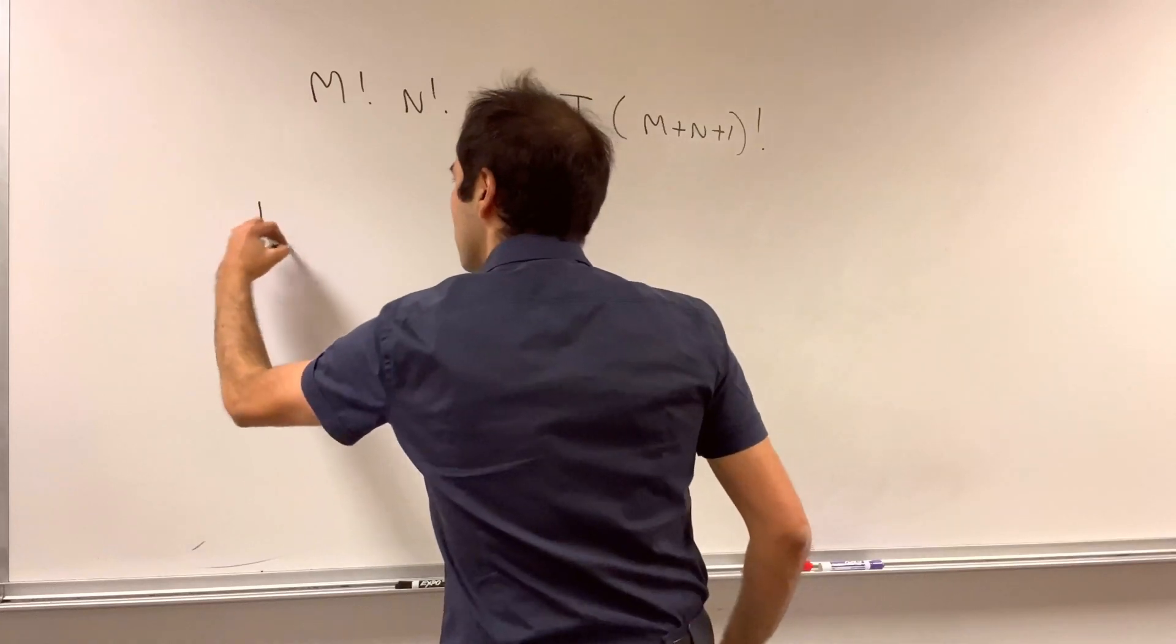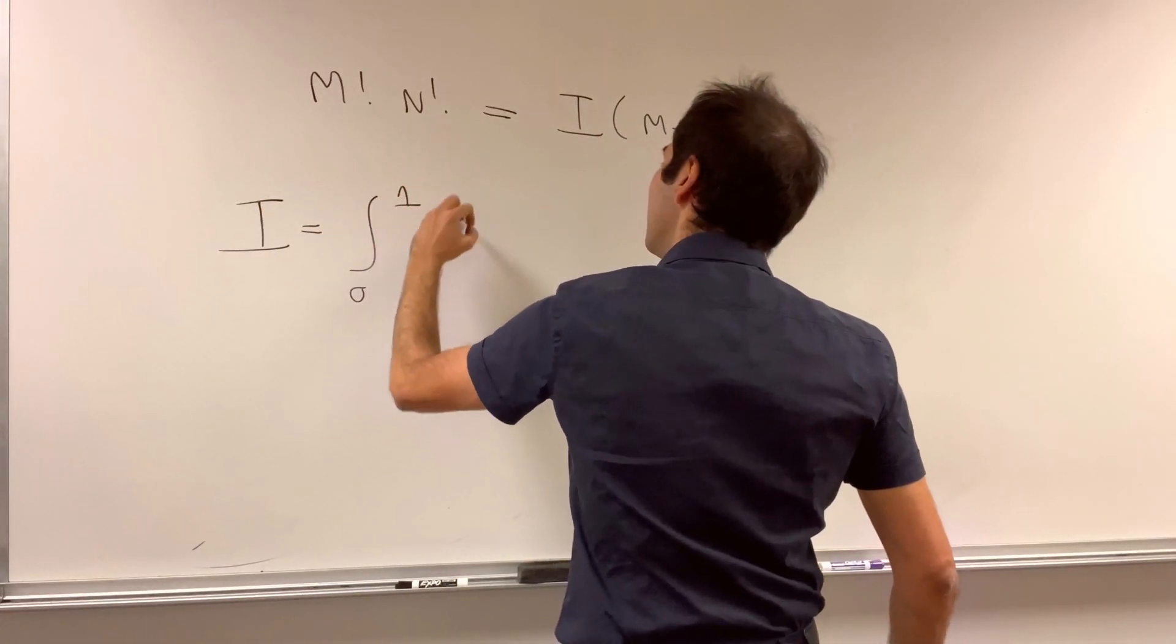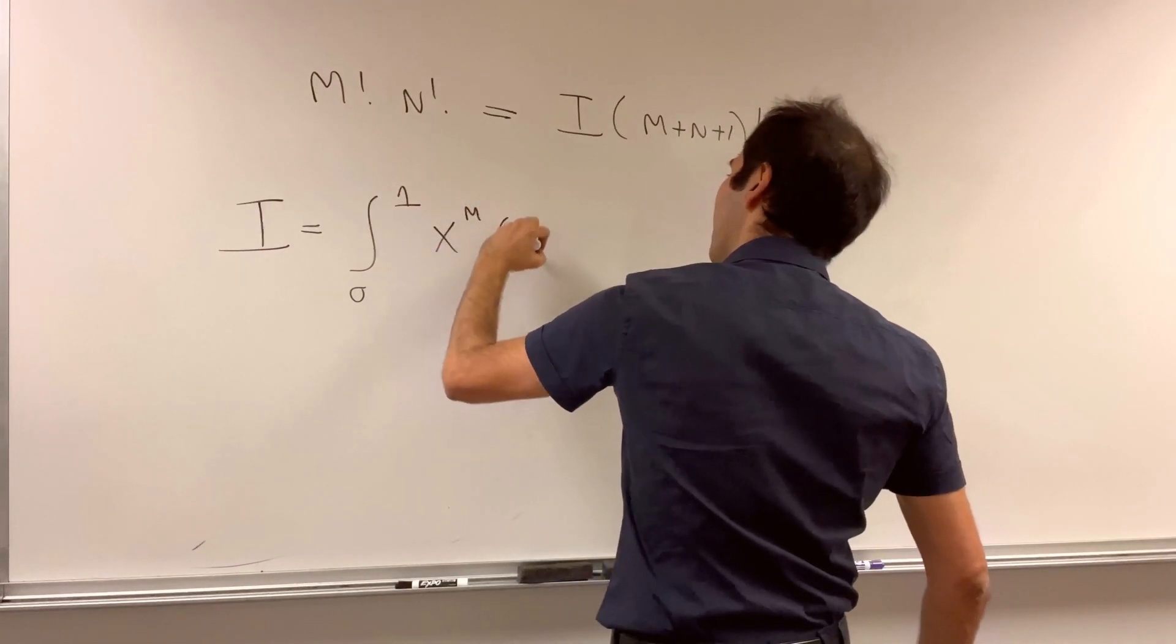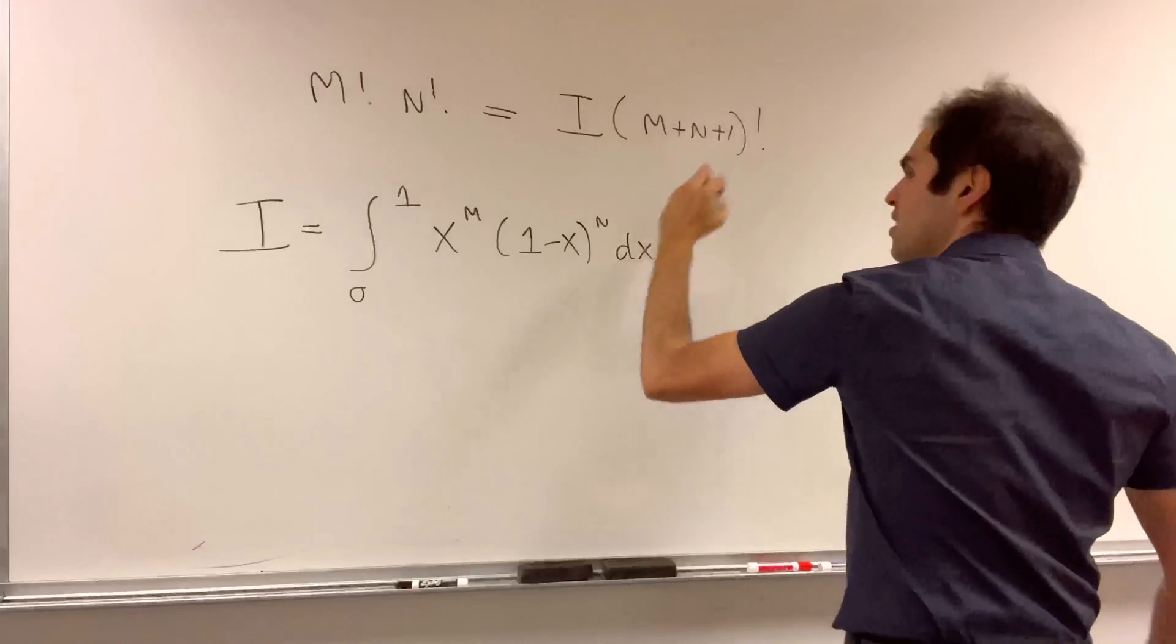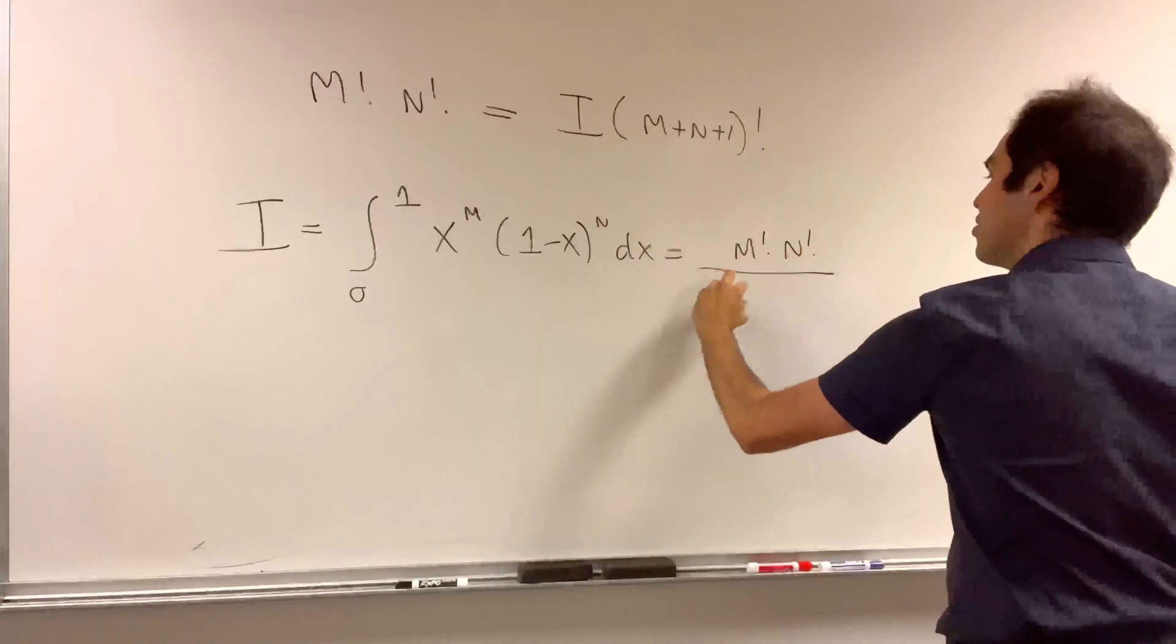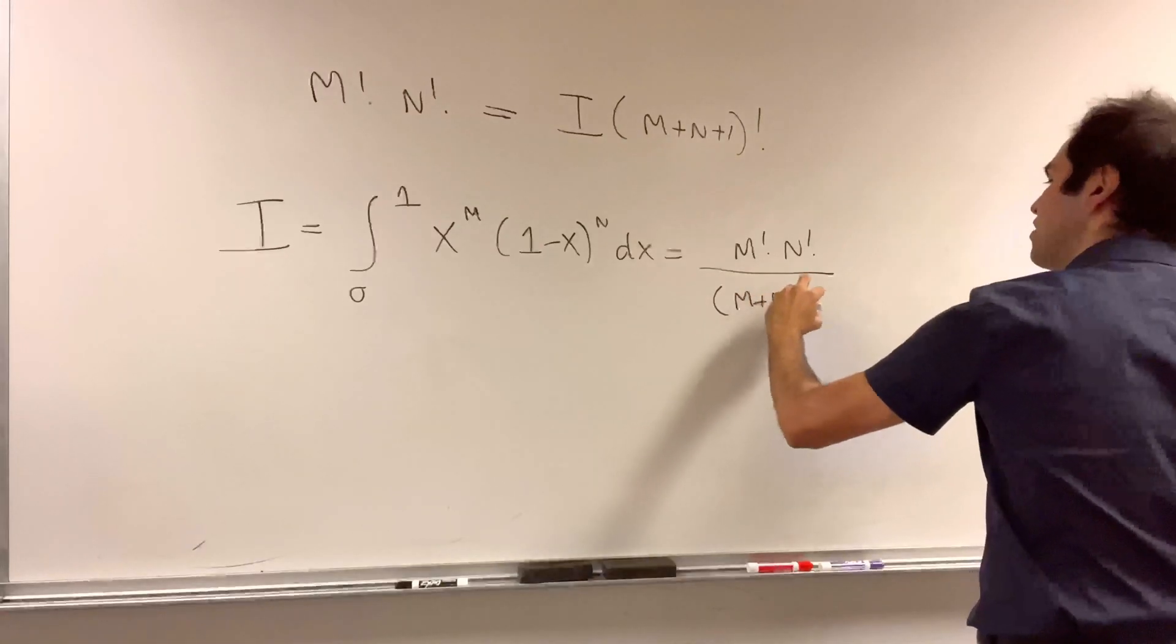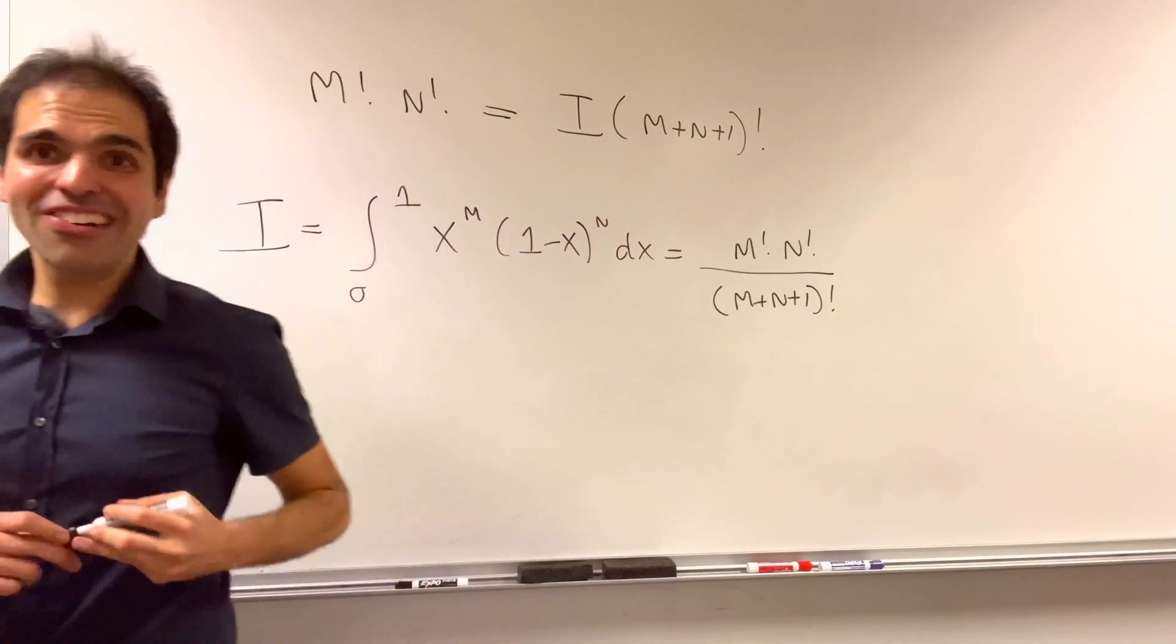And so lo and behold, our integral, which remember is just an integral from 0 to 1, x to the m, 1 minus x to the n, dx, then just becomes m factorial times n factorial over m plus n plus 1 factorial. Whoa! How cool is that?